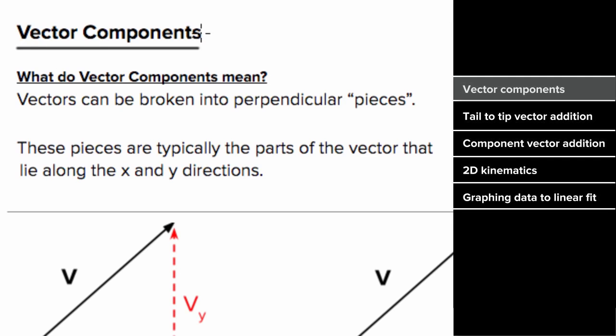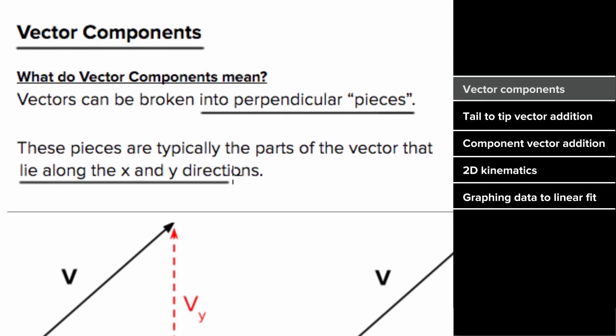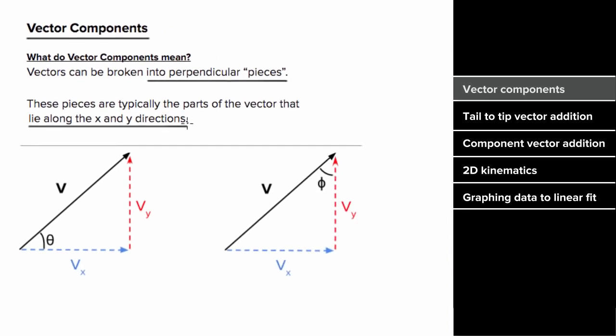What do vector components mean? Vector components are a way of breaking any vector into two perpendicular pieces. For convenience, we typically choose these pieces to lie along the x and y directions.